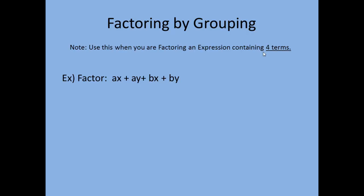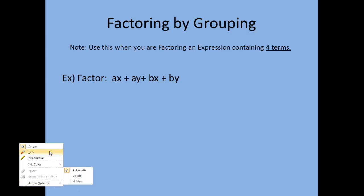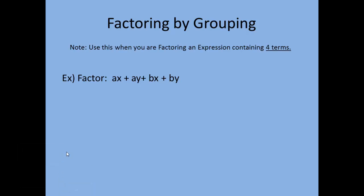Our example says to factor ax plus ay plus bx plus by. When you're factoring, the first thing you should always look for is a greatest common factor for the entire expression. In this case, all four terms do not have a common factor — there's nothing we can factor out of all four of them. This is where factoring by grouping comes into play.